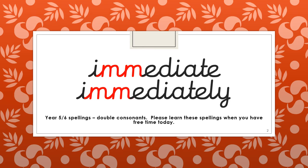As you can see, yet again we have our double consonants — double M — in both words. Just to remind you, we're going to have a spelling check on Friday on the words you'll be learning this week. Don't worry too much, it won't be in your book, it's just at home. If you don't want to share your answers, don't worry — it's just to try and help you learn your Year 5/6 spellings. So: 'immediate', 'immediately'.